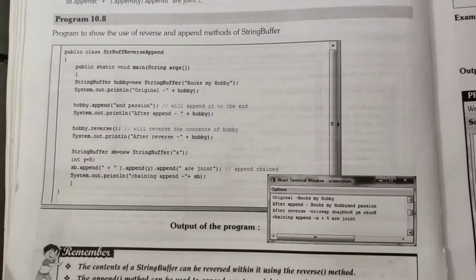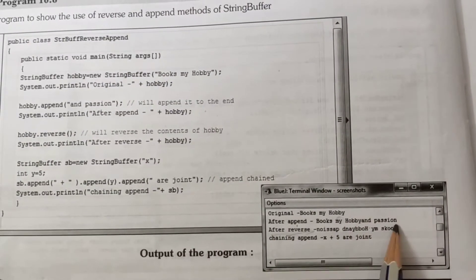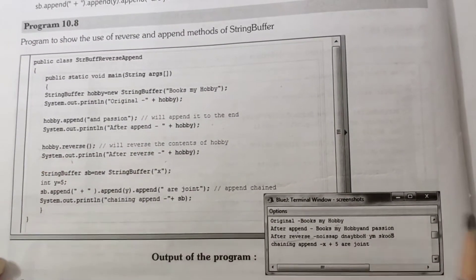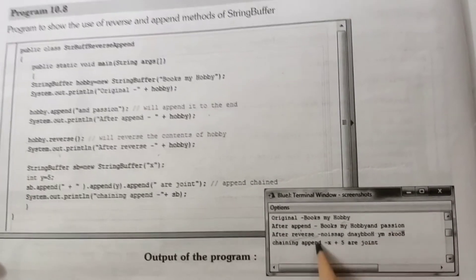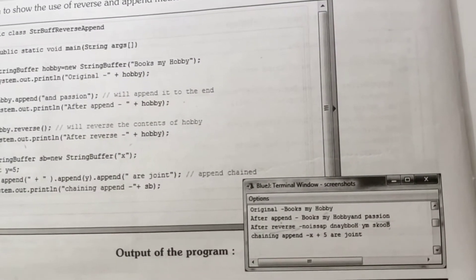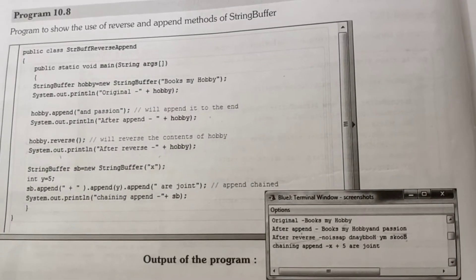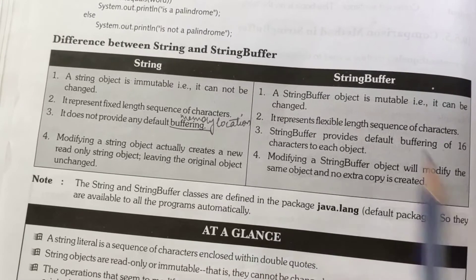Let's look at the programming section. The original string is "books my hobby". Using append(), hobby.append("and passion") adds "and passion" to the existing string. For reverse(), the entire statement is reversed — first 'n' then 'o' then 'i' then double 's' then 'a' then 'p' — the whole string is reversed. Append means adding contents to the existing string, and reverse means reversing all the contents of the string.